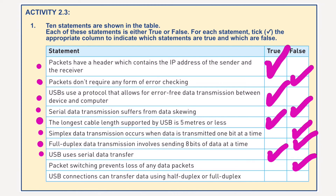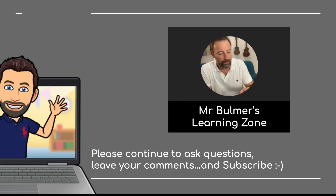USB connections can transfer data using half duplex or full duplex. That is true, especially when using a device such as a printer where the printer needs to talk back to the computer to say it's out of paper or there's a paper jam. That is it for this video — there are the correct answers. Thank you very much for watching. Please subscribe and click on the notifications so I can let you know when the next video is available. Bye for now.